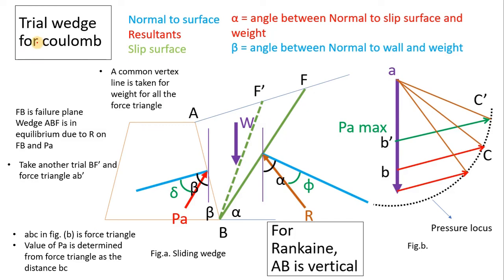This is how trial wedge for Coulomb and for Rankine can be carried out. Trial wedge is simply a method of finding the earth pressure using Coulomb's theory or Rankine's theory.